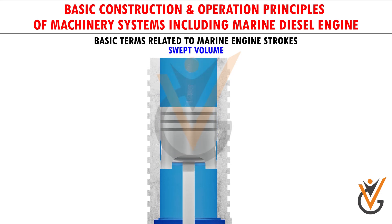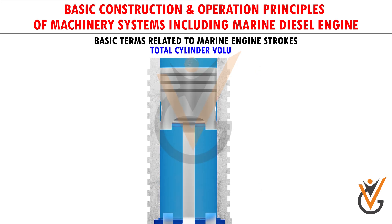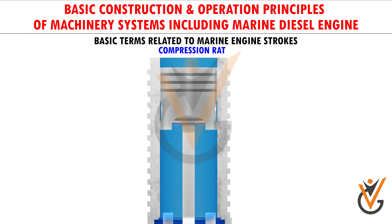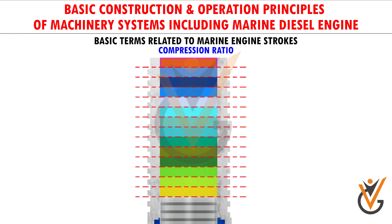Swept volume: swept volume is the displacement of one cylinder; it is the volume between top dead center and bottom dead center. Total cylinder volume is the clearance volume and swept volume of the cylinder. Compression ratio: this is the ratio obtained by dividing the volume at bottom dead center by the volume at top dead center.